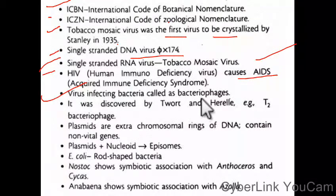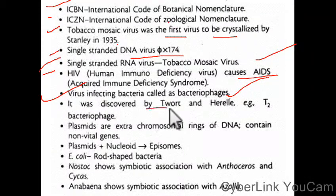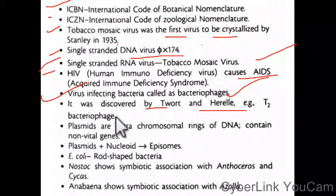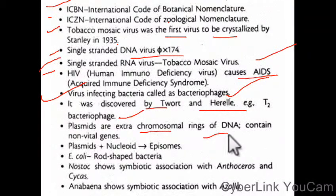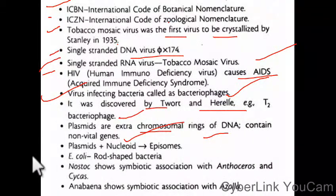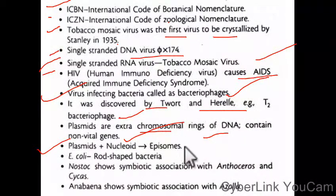Bacterial topics include the fertility (F) plasmid. Plasmids are extrachromosomal circular rings of DNA that contain non-vital genes.